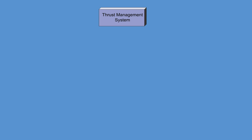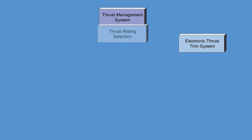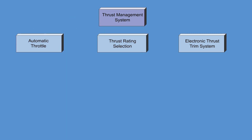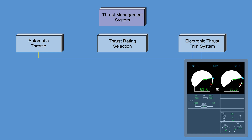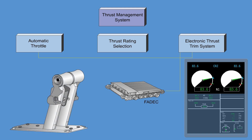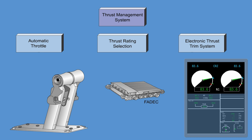The thrust management system consists of the electronic thrust trim system, thrust rating selection, and the automatic throttle. The electronic thrust trim system controls the fine tuning of the automatic throttle, provides in-one command synchronization, and passes engine synchronization commands to the FADEC. The electronic thrust trim system is coupled to the automatic throttle and is disabled when the automatic throttle is disengaged.